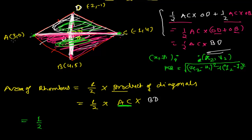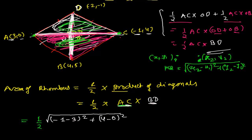For AC, taking C as (X2, Y2) and A as (X1, Y1): AC = √((−1 − 3)² + (4 − 0)²). For BD, taking D as (X2, Y2) and B as (X1, Y1): BD = √((−2 − 4)² + (−1 − 5)²).